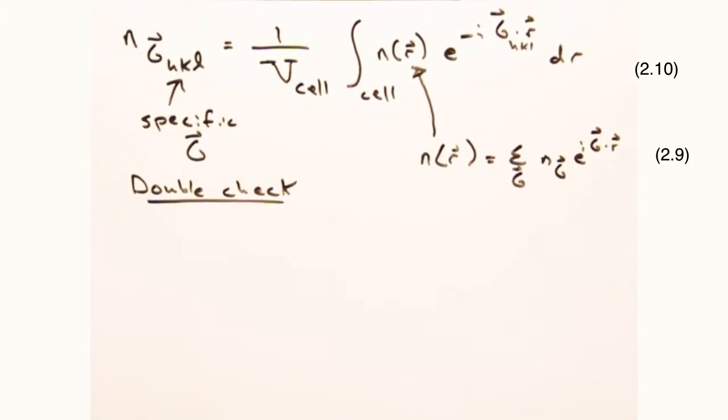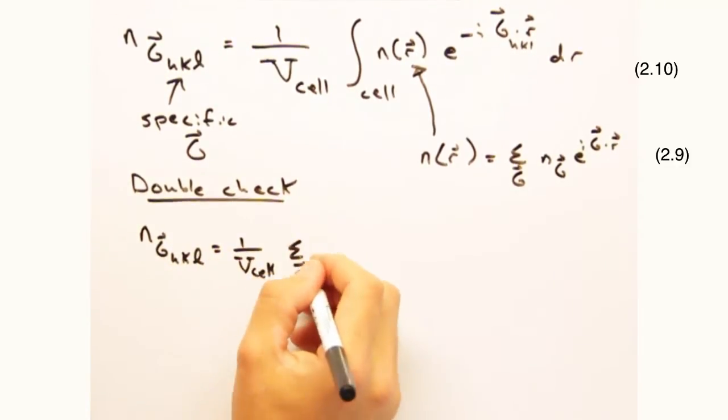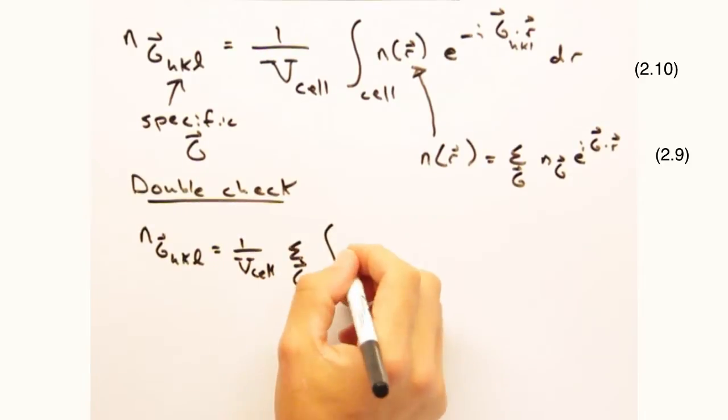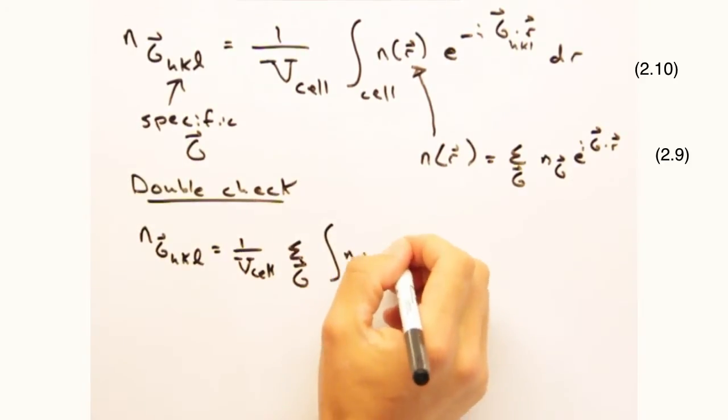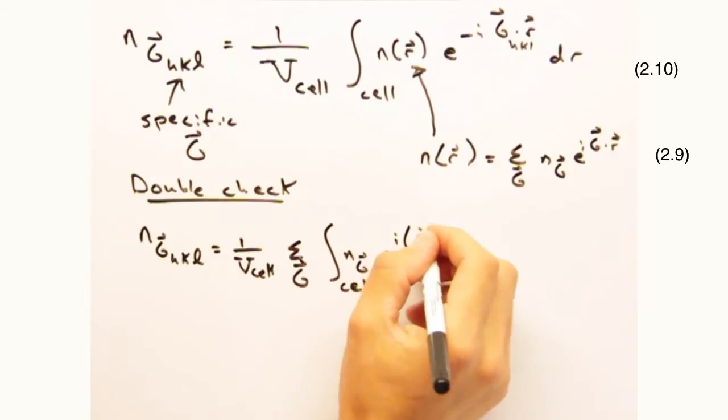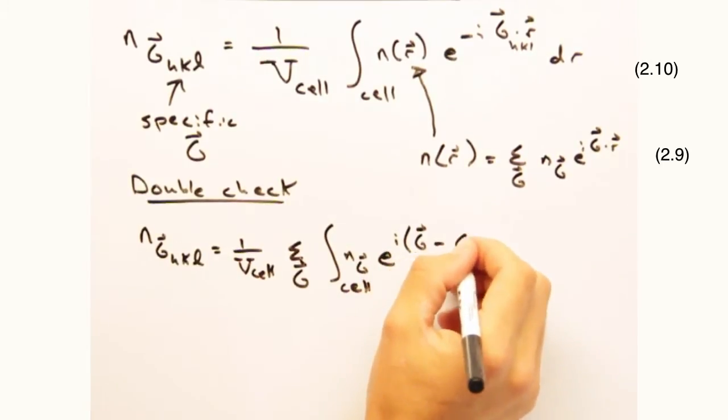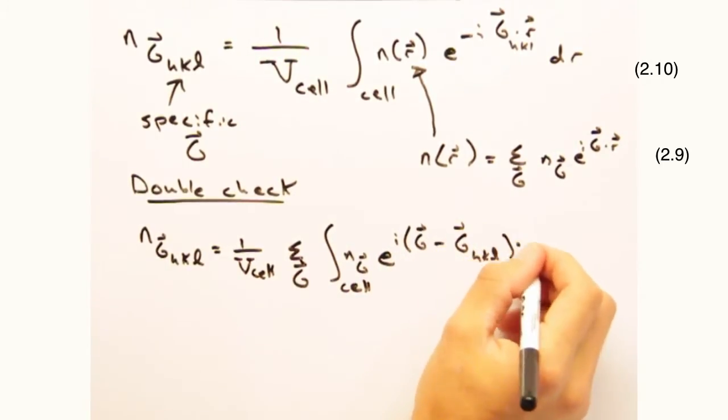Since we're invoking an infinitely periodic crystal, there's some tricks we can play which make the math a bit easier. Instead of integrating over the whole volume, we're going to slap a one over the cell volume in front and integrate over just one unit cell. So now when we plug in our Fourier series representation of n of r and move some stuff around, we get the following expression.